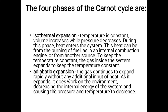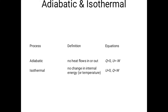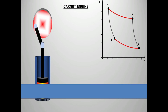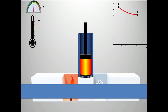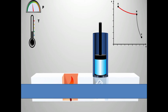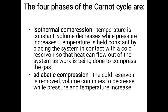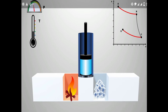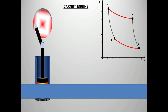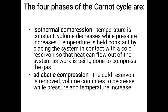Step three is isothermal compression: we place the cylinder on the cold reservoir and compress it at constant temperature — this is called isothermal compression. Step four is adiabatic compression: we place it on a non-conducting surface and continue to compress it until it returns to its initial state. During the expansion steps (A to B and B to C) we get work from the system, while during compression steps (C to D and D to A) we supply energy to the system.